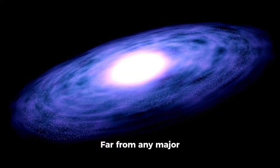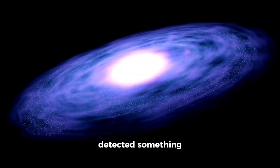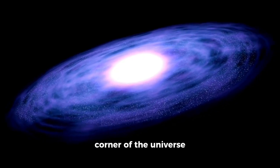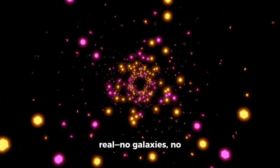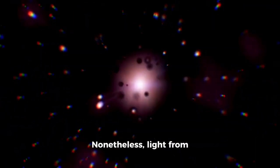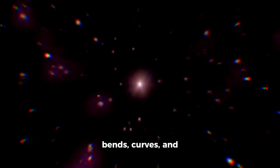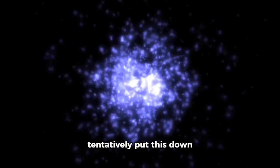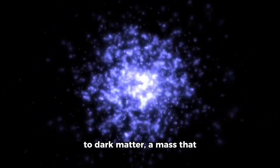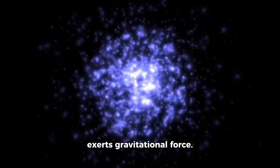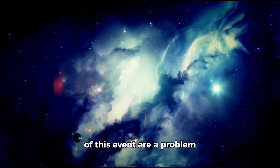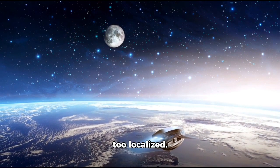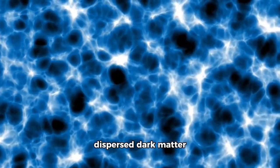And far from any major galaxy, in a remote region, we detected something completely unexpected: the effect of a gravitational lens in a corner of the universe where nothing visible is present—no galaxies, no stars, no dark matter. Nonetheless, light from more distant galaxies bends, curves, and distorts as if a huge object is staying there. Astronomers have tentatively attributed this to dark matter, a mass that we cannot see but which exerts gravitational force. But the exactness and force of this event are problematic, as the distortion is excessively strong and localized. It doesn't act like a dispersed dark matter cloud.